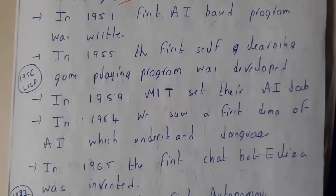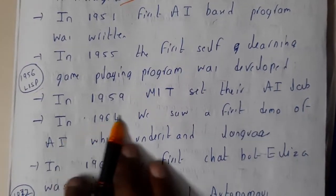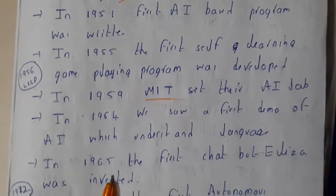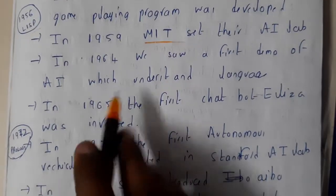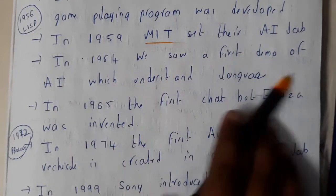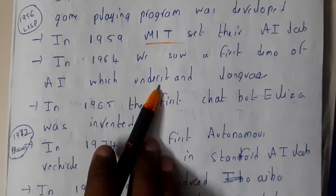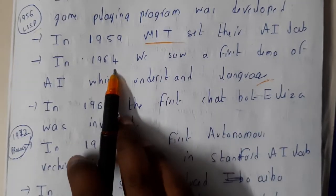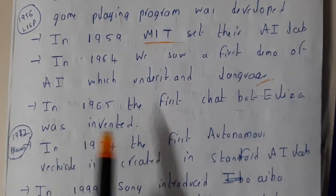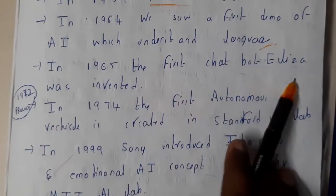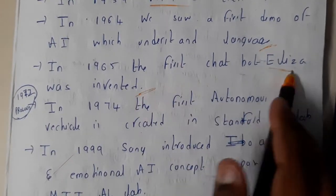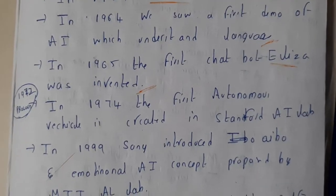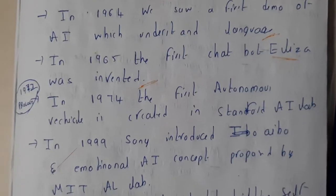In 1959, MIT, a prestigious university, set up an AI lab for its development and research. In 1964, the first demo of AI that could understand language was introduced — the first demo of ELIZA. In 1965, the first chatbot, ELIZA, was invented. We'll be discussing ELIZA's functionality in our next lecture.